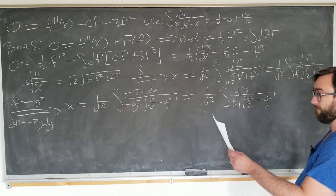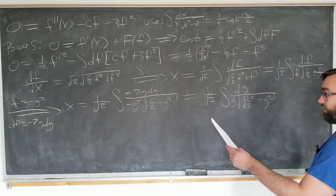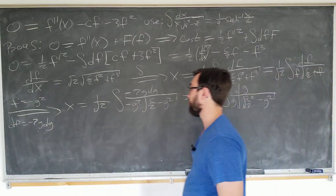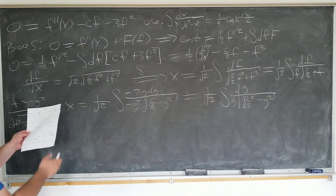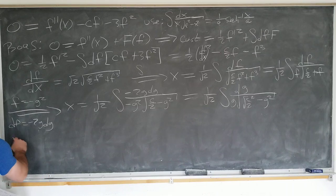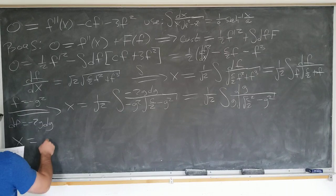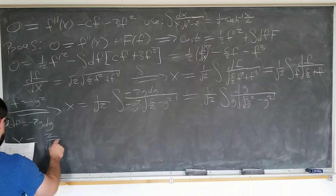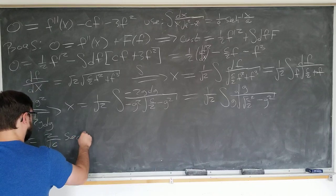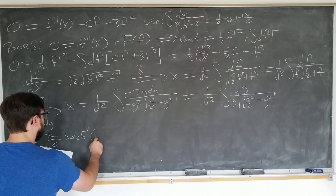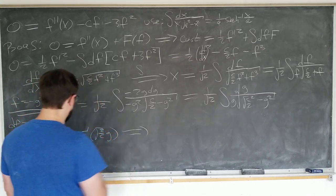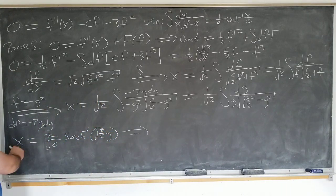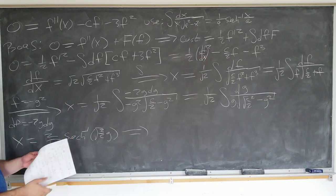So now we can go ahead and write down our solution immediately using the integral. This tells us that x is equal to 2 over square root of c sec inverse square root of 2 over c g. And we can just take the c over 2 over here and take the secant both sides to obtain g by itself.